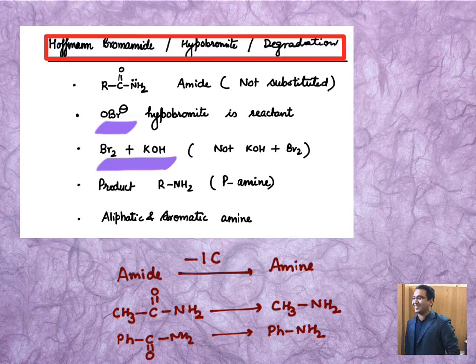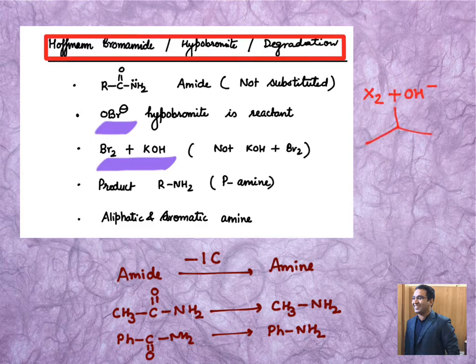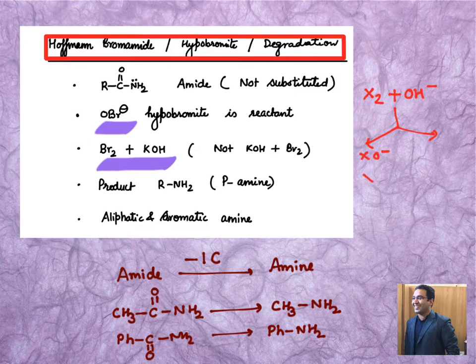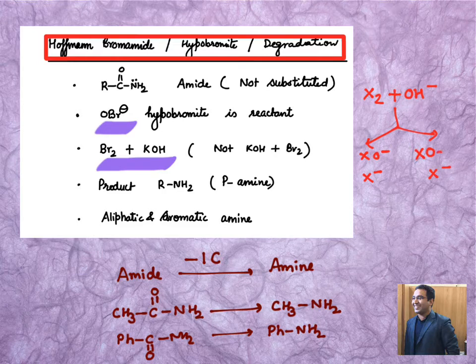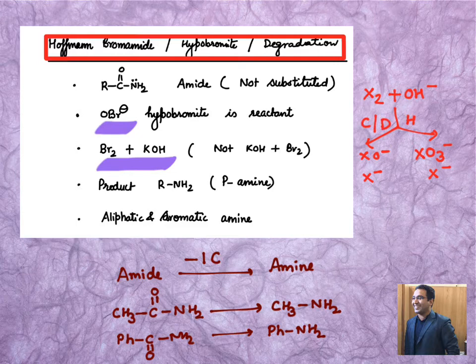It goes something like this: let's say you are given halogen plus OH minus. This can give you XO minus along with X minus, or it can give you X minus along with XO3 minus. This reaction happens in cold dilute condition whereas this happens in hot concentrated condition.